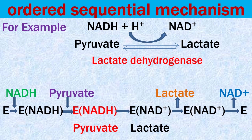Lactate dehydrogenase catalyzes the formation of lactate from pyruvate. In this mechanism, NADH and pyruvate are the two substrates, where NADH (the coenzyme) always binds first with the enzyme, with pyruvate binding afterward. This results in formation of ternary complex E-NADH-pyruvate, marked in red. During the reaction, pyruvate is reduced to lactate while NADH is oxidized to NAD+. The product lactate is always released first from the enzyme, followed by NAD+.